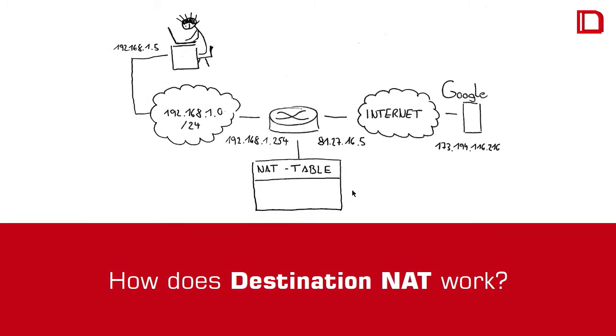So you make the request and the table is stored. If there is an answer, then the table knows Matthias was asking with his notebook. So you have to store it somewhere. The next thing is that the table is stored with entries, and the question is how long are things stored in the table? This is how destination NAT or source NAT work with storing everything in the NAT table.